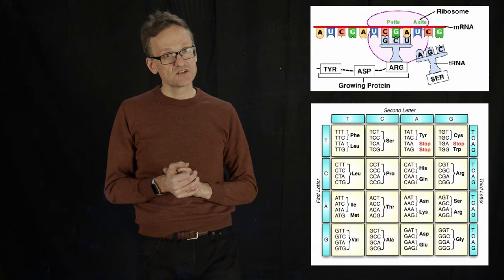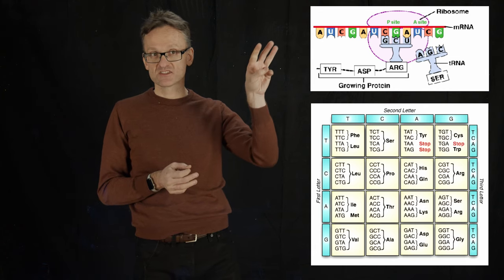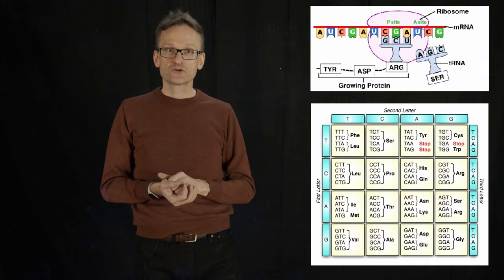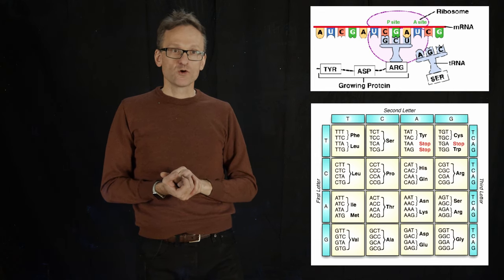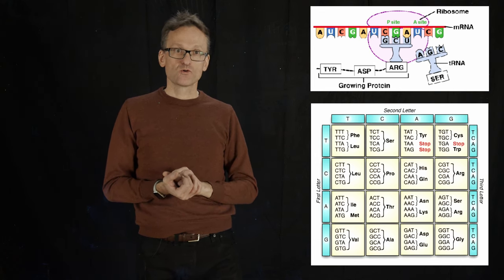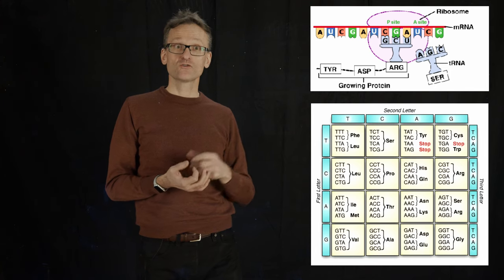So DNA is special, well RNA in this case is special, that you have triplets of base pairs, and each triplet of base pairs will code for a particular amino acid, or indicate the start of a gene or the stop of a gene.